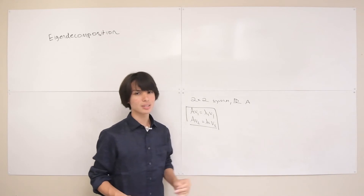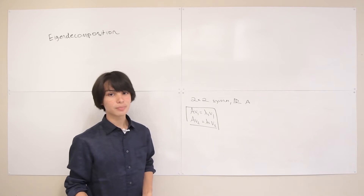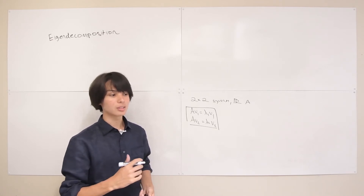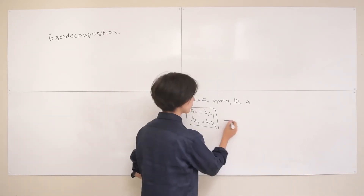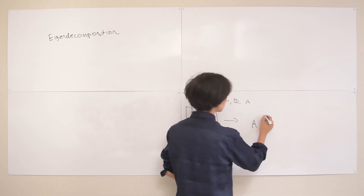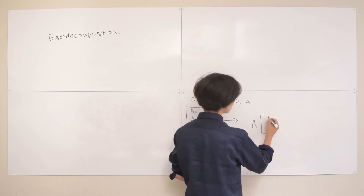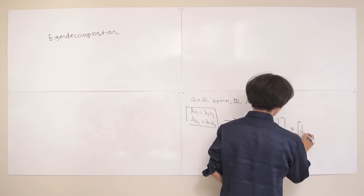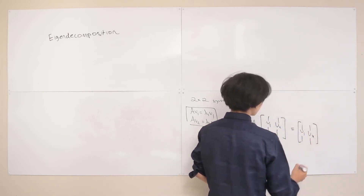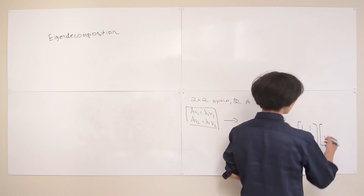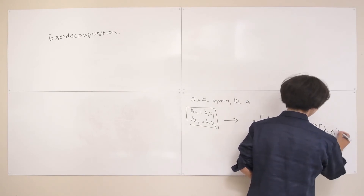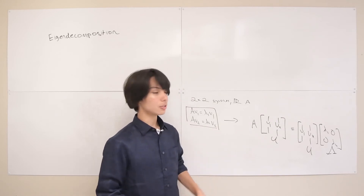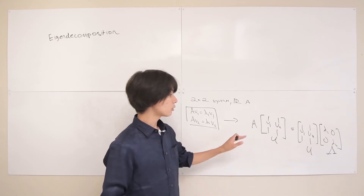How can we express this more succinctly? The answer is a matrix equation. We write A multiplied by matrix U — which has the eigenvectors as its columns, with v1 as the first column and v2 as the second — equals the same eigenvector matrix U multiplied by a diagonal matrix with the eigenvalues along its diagonal: lambda1 and lambda2. We call this diagonal matrix uppercase lambda.